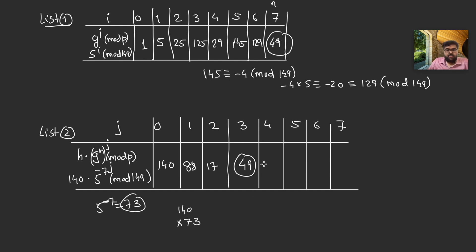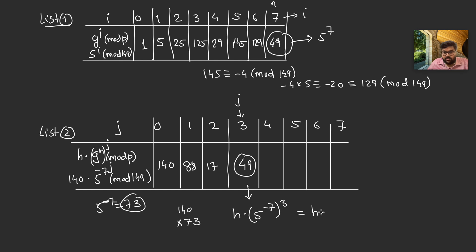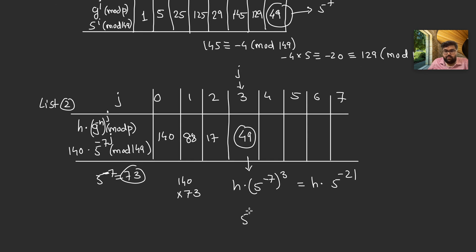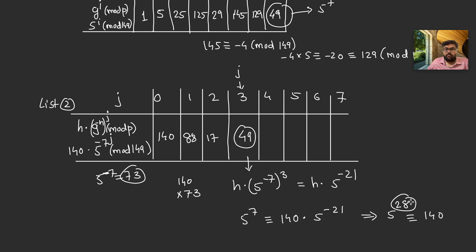We have a match: 5^7 = 140 × (5^{-7})^3, which means 5^7 = 140 × 5^{-21}. Rearranging: 5^{21+7} = 140, so 5^{28} ≡ 140 (mod 149). The discrete logarithm is x = 28.